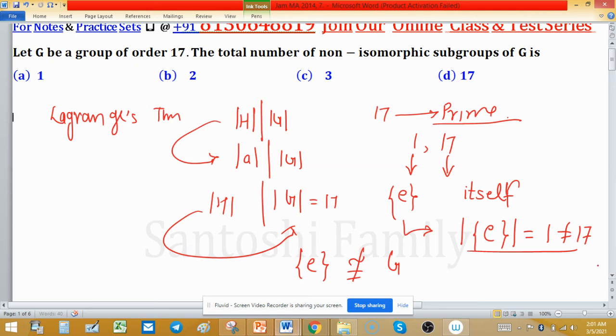So this one is not isomorphic to that one. We have two non-isomorphic subgroups here - this is what was asked. Therefore, option B is correct.